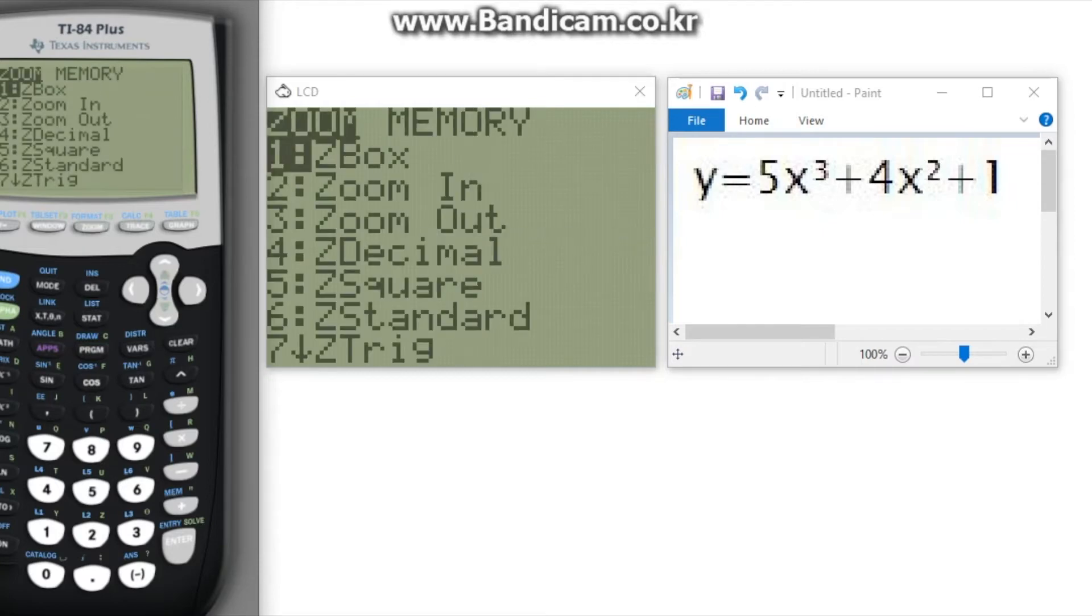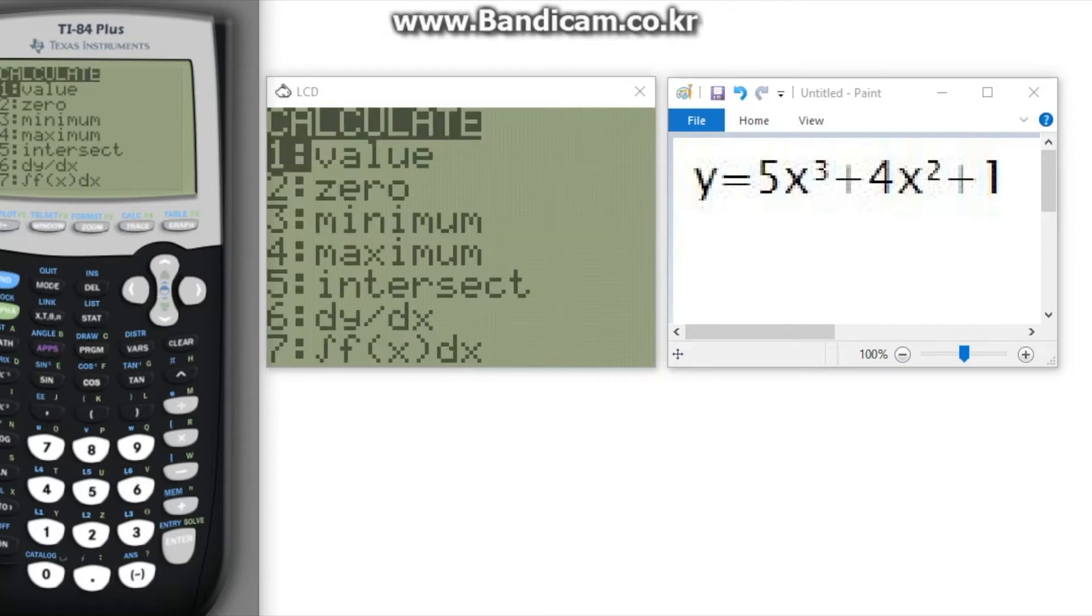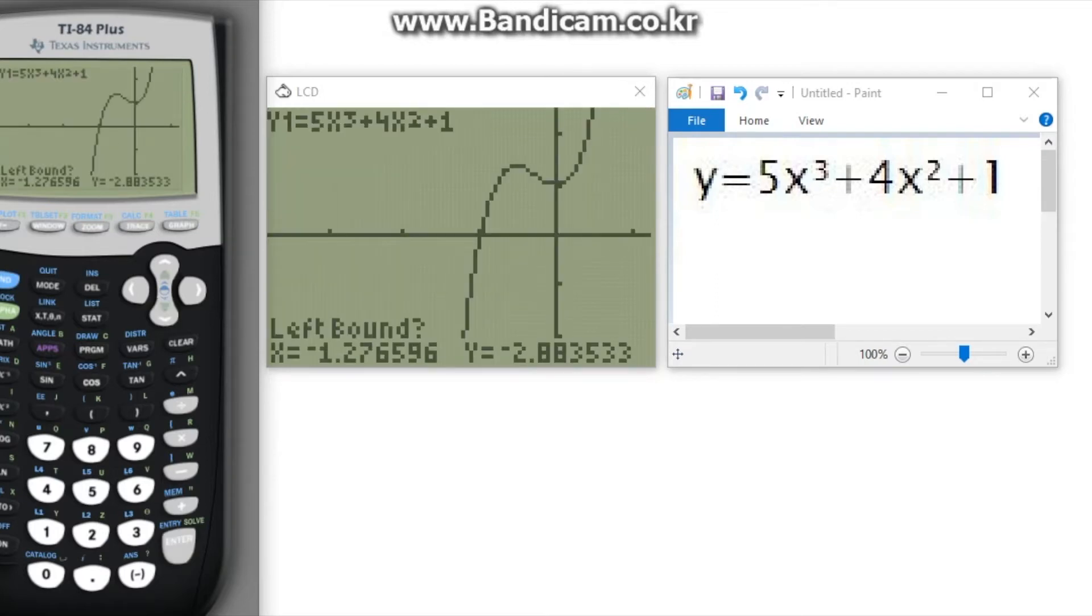Zeros are points where the graph touches or crosses the x-axis. To find these points, you can use a function on the calculator but first we will be zooming in to get a better picture of the graph. To find the zero, go to 2nd trace and press 2 where it says zero on the calculate screen. To find the left bound point of the zero, use the arrows to move the cursor to a point under the x-axis and press enter.